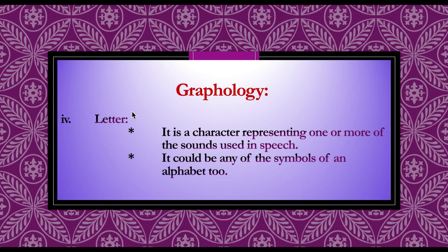The fourth rank scale is letter. A letter is a character representing one or more of the sounds used in speech, and it could be any of the symbols of an alphabet — A, B, C, D and so on. So the four rank scales of graphology are: first, sentence; second, sub-sentence; third, word; and fourth, letter.